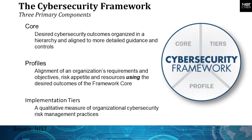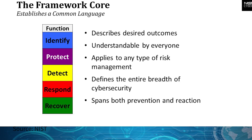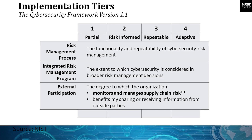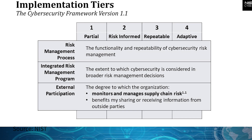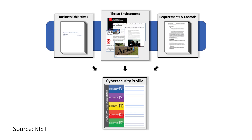The NIST Cybersecurity Framework consists of three main components: the Core, Implementation Tiers, and Profiles. The Core provides a set of cybersecurity activities and guidelines that are necessary to manage and reduce the cybersecurity risks of an organization. Tiers assist organizations in understanding the context of cybersecurity risk management in their business environment and are often used as a communication tool to understand the organization's cybersecurity risk appetite, mission, and budget. Profiles are used to find and prioritize opportunities to improve the cybersecurity posture of an organization.